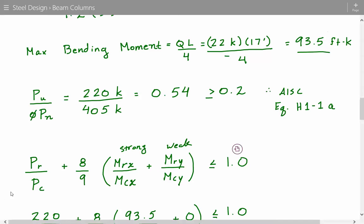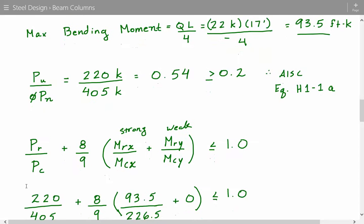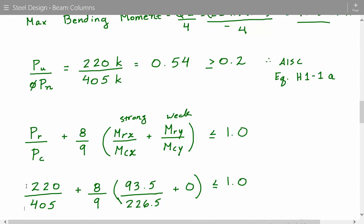So we just plug in the numbers. The required axial strength is the factored load we calculated, 220 kips. The available strength is 405 kips, plus 8 over 9. And then the required moment strength is the maximum bending moment occurring on this beam column, which we calculated is 93.5 kip feet. And the available moment strength, which is also equal to the plastic moment strength in this case, is 226.5 kip feet.